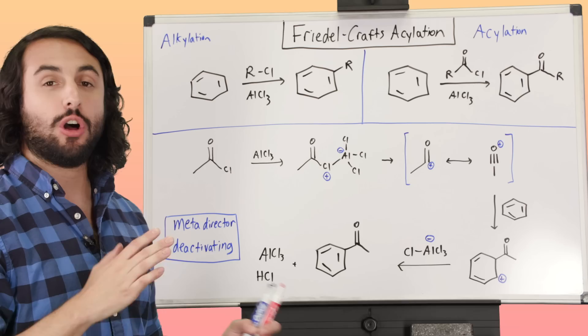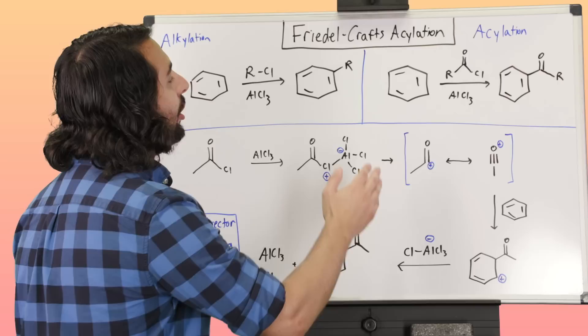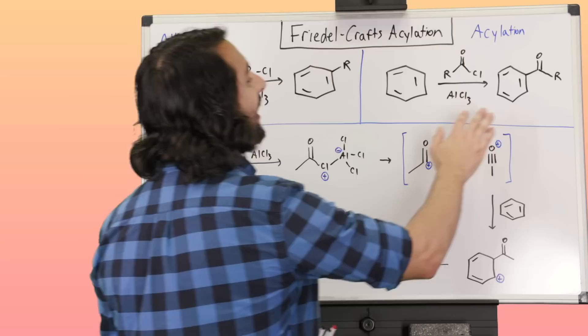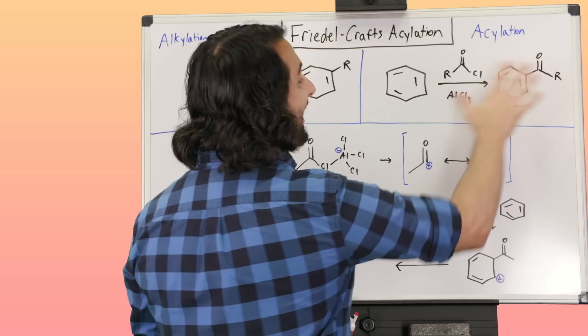Friedel-Crafts acylation is extremely similar. We have the same situation, but we have this acyl chloride. This is an acyl group. Again, the same aluminum trichloride catalyst, and we are going to get this acylated benzene here. So this is an acyl group. We've got this, it's a ketone. So we're forming a ketone here, and so that's the acylation.